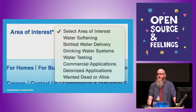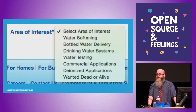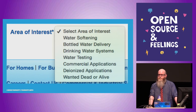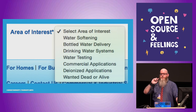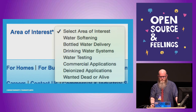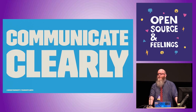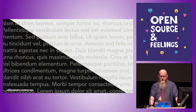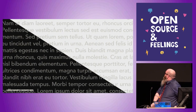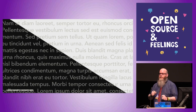I recently had a water softener installed in my home, and in order to get quotes I went to a number of websites. This is Culligan's website — at the bottom of their contact form, what's listed threw me. And I thought: this is a perfect example for my talk. You need to communicate clearly.